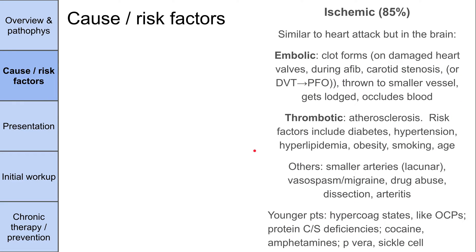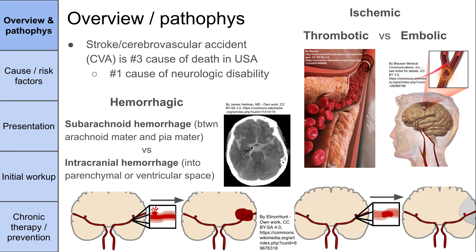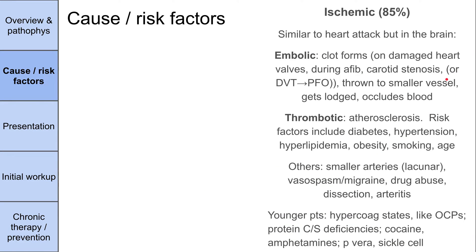Now let's talk about causes and risk factors for strokes, starting with ischemic strokes, which are 85% of all strokes. For embolic strokes, a clot forms and is thrown to a smaller vessel leading to the brain. Clots can form on damaged heart valves including artificial valves, during atrial fibrillation, from a piece of carotid stenosis, or in the case of a patent foramen ovale, a DVT can shoot through from the venous system to the arterial system and end up as an embolic stroke.